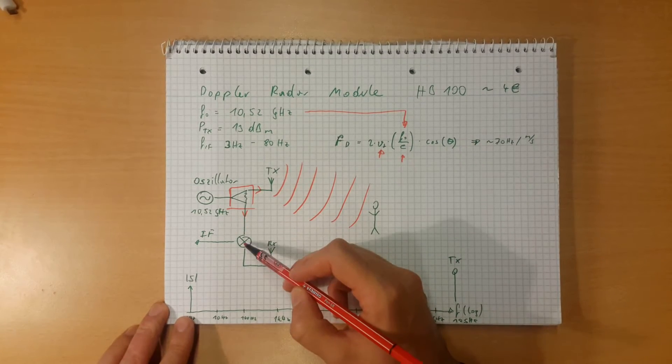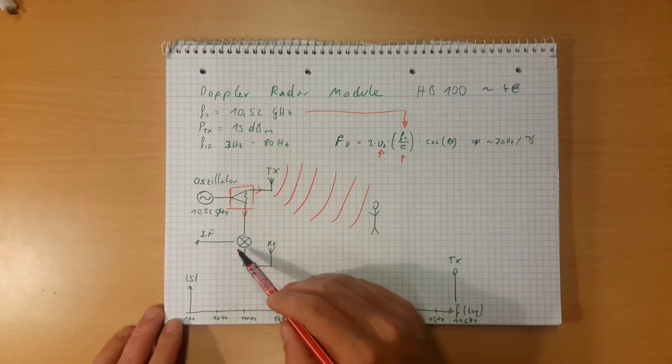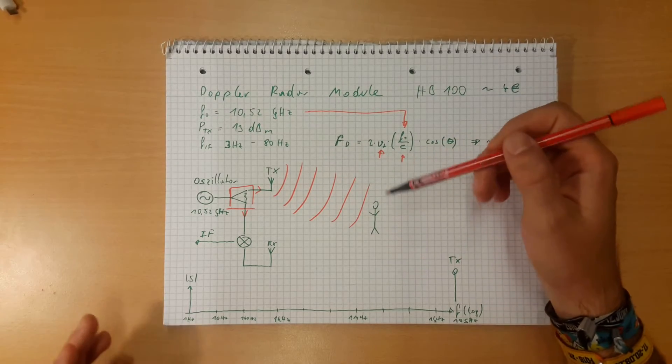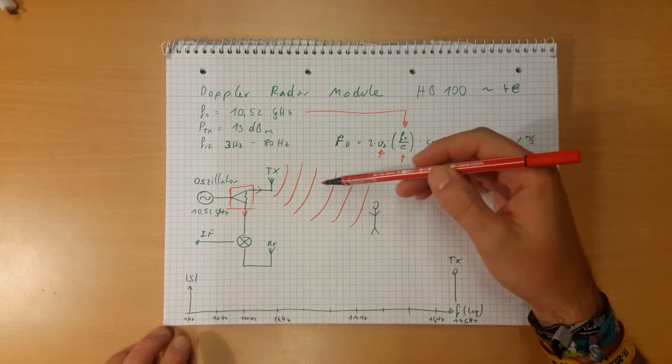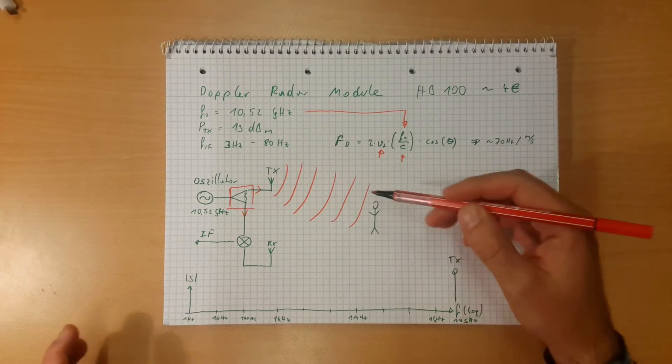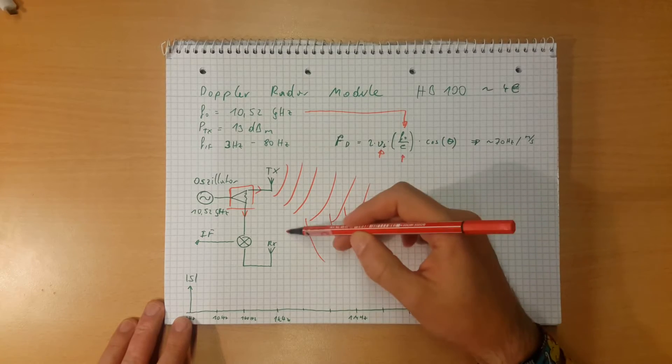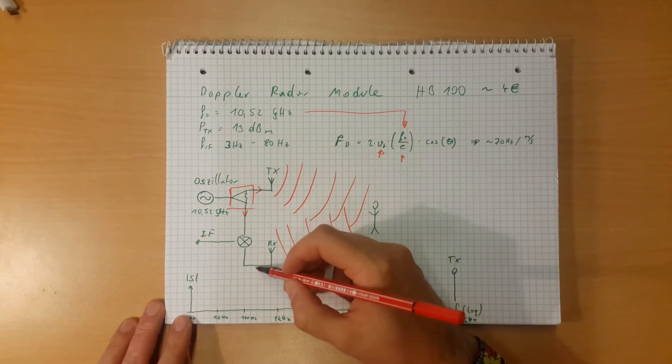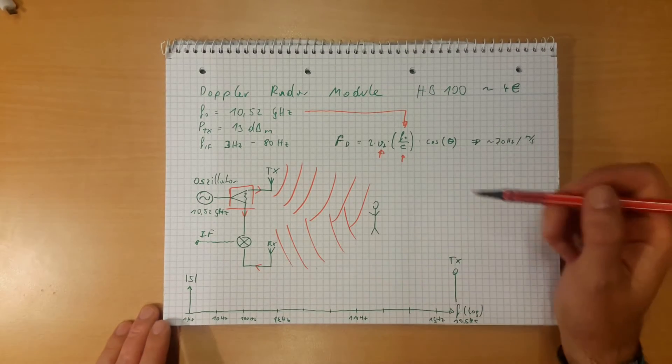One signal component that is emitted through the transmit antenna and another signal which goes directly to the mixer or down converter as it is also called. And when we place this module somewhere and it is going to face some moving object, then of course any kind of object that is present there will reflect the waves that are emitted from the TX antenna. This will be picked up by the RX antenna and will be also provided to the down converter or mixer.